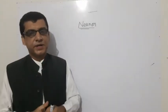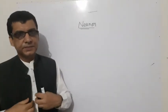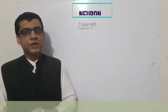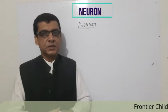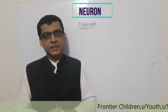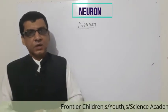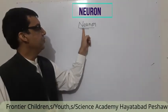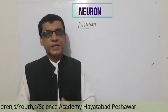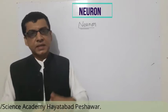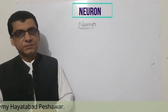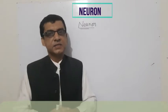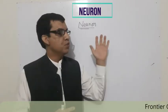Assalamu alaikum, my dear students. In the previous two lectures we studied a lot about the brain and spinal cord. Today's topic is the neuron. The brain and spinal cord consist of cells, and these cells are actually called neurons.